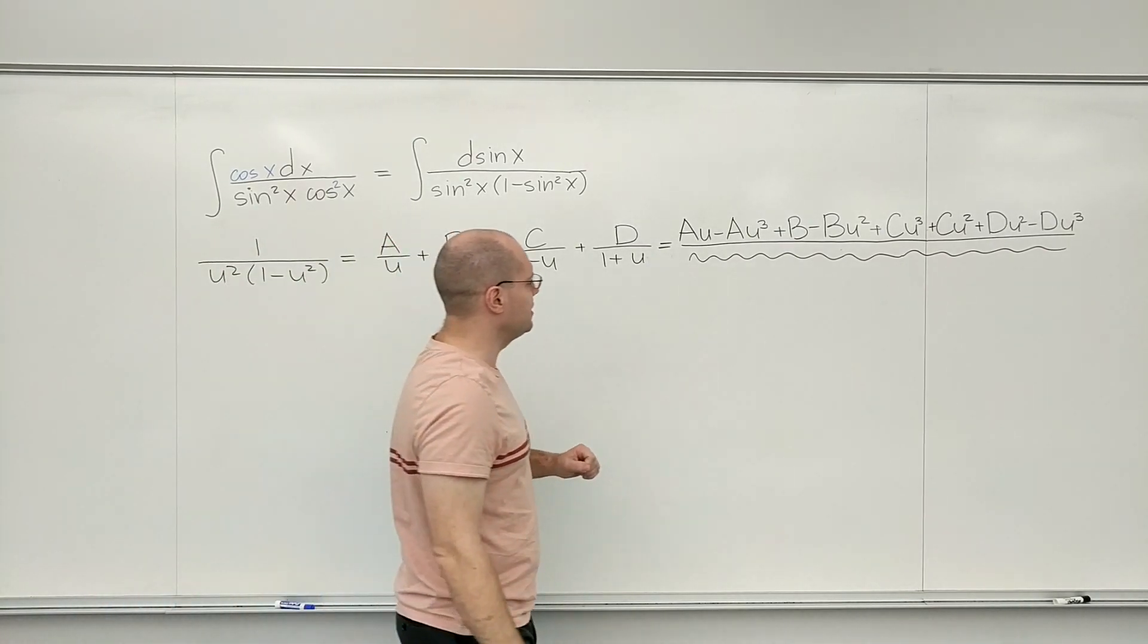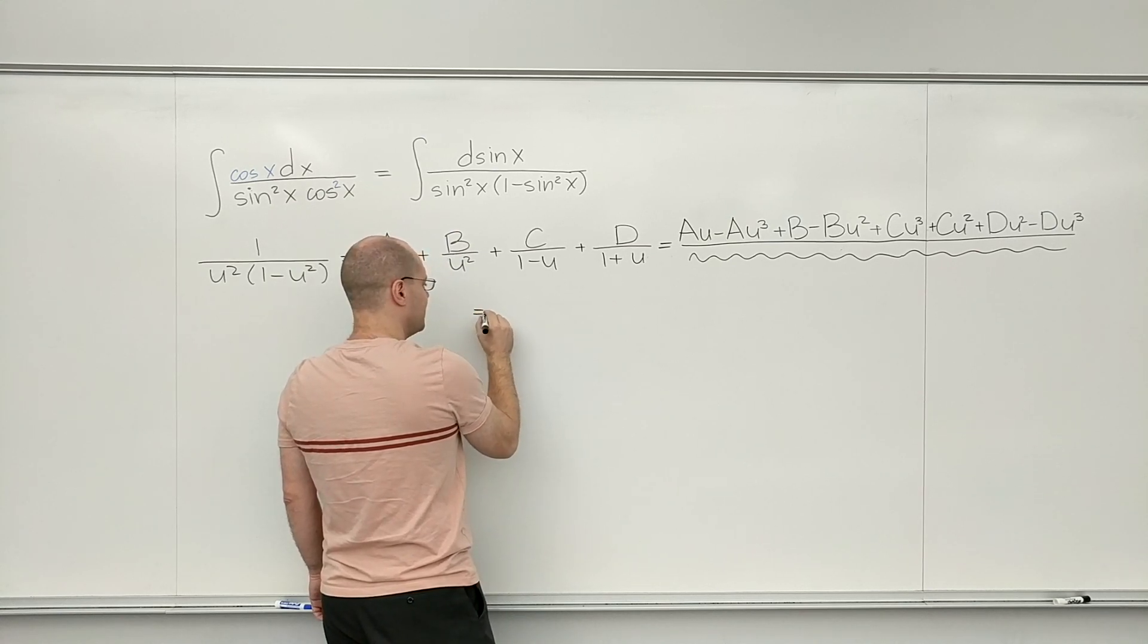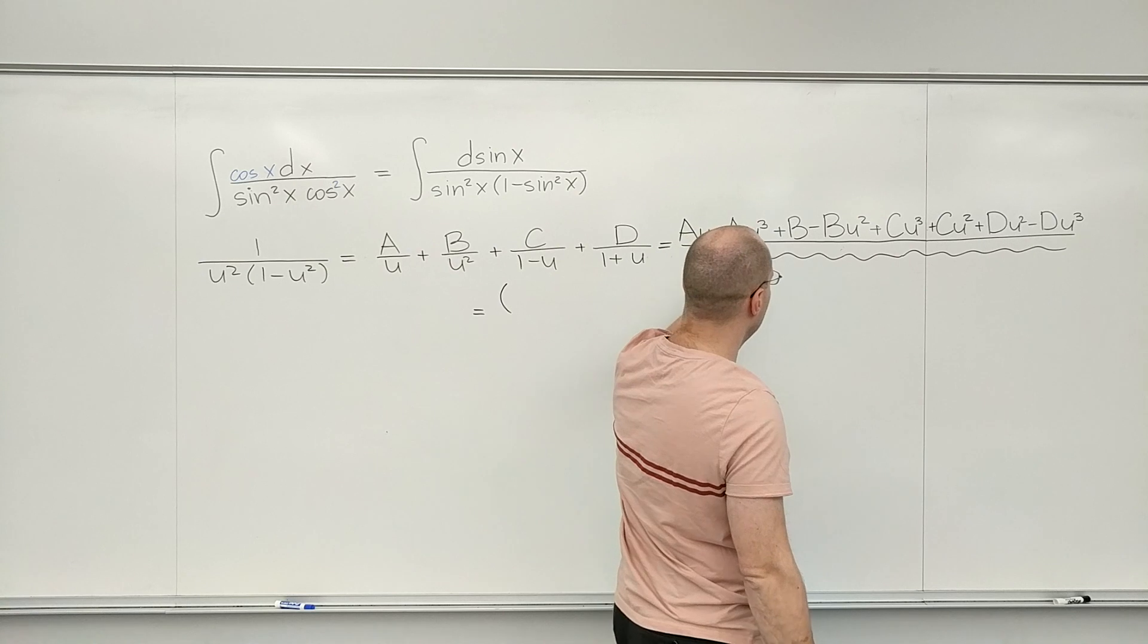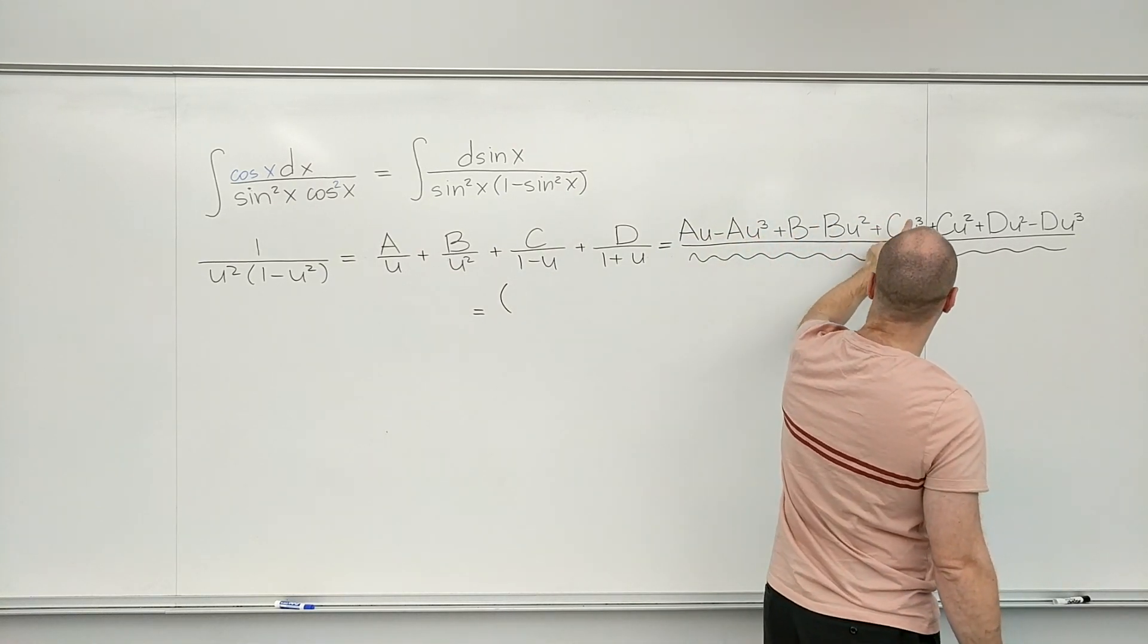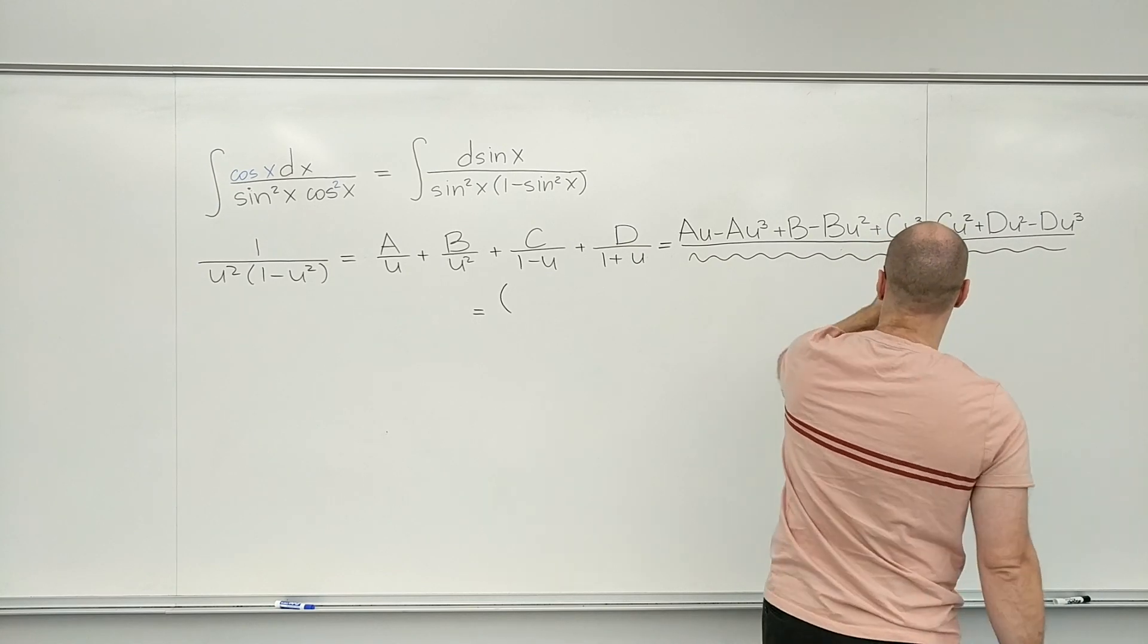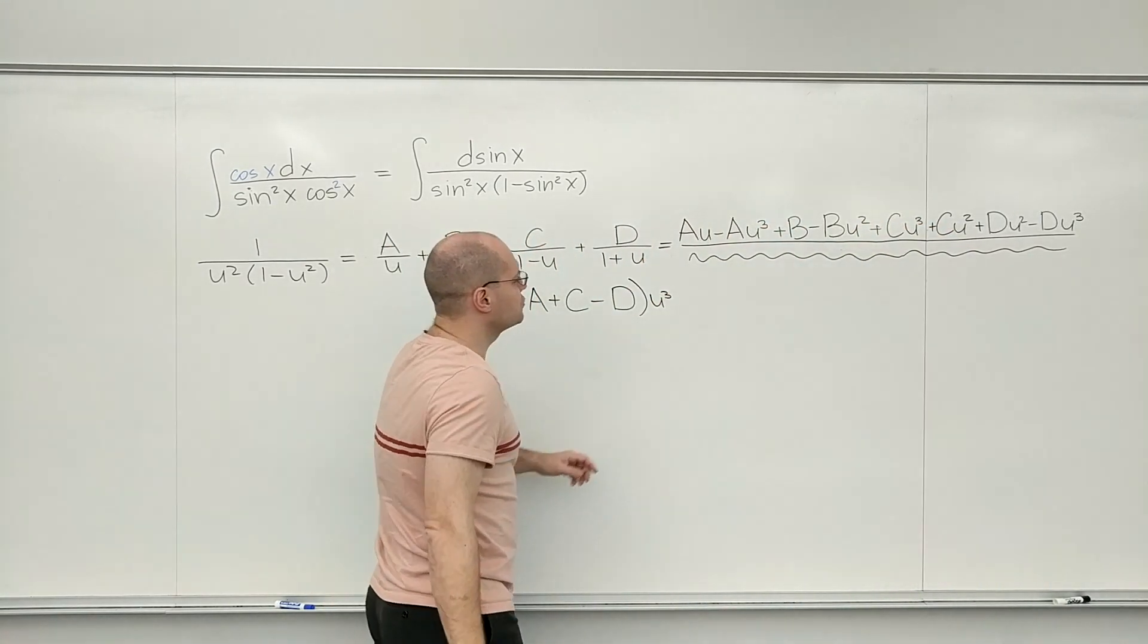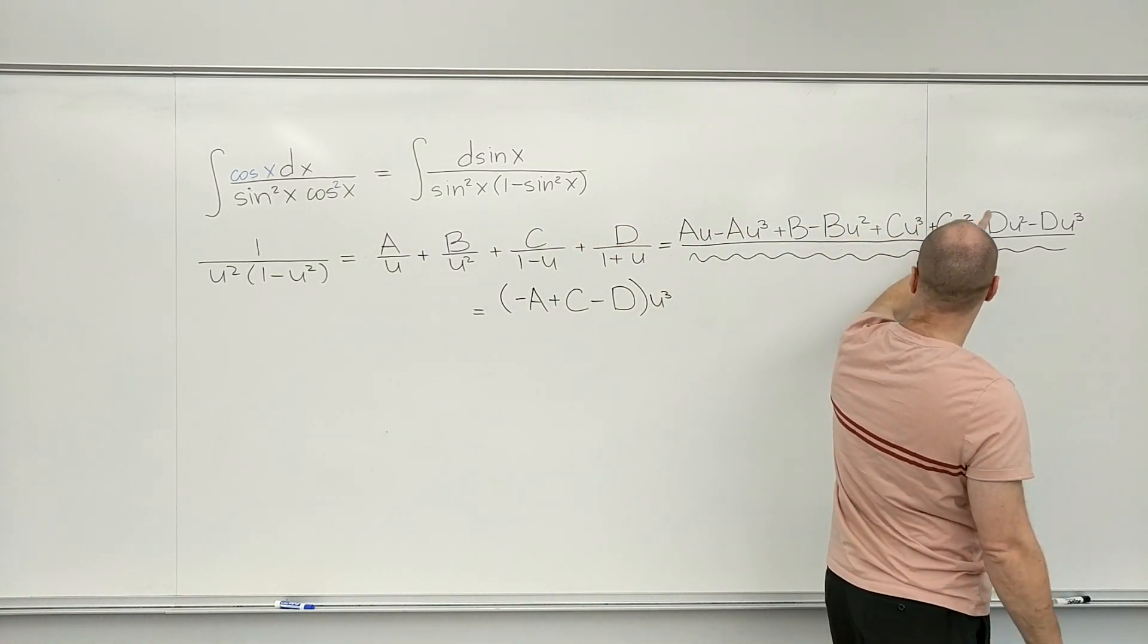So now let's see. I guess I'll collect like terms, just to be systematic about it. And we have, for cubes, we have minus A, minus A, plus C, minus D. For squares, we have minus B, plus C, plus D.